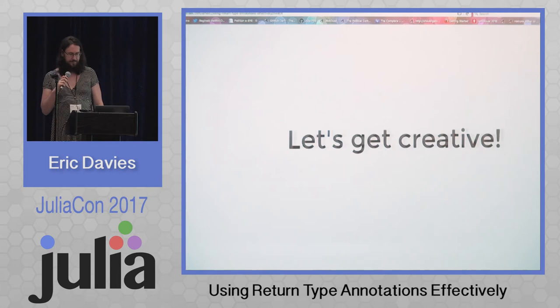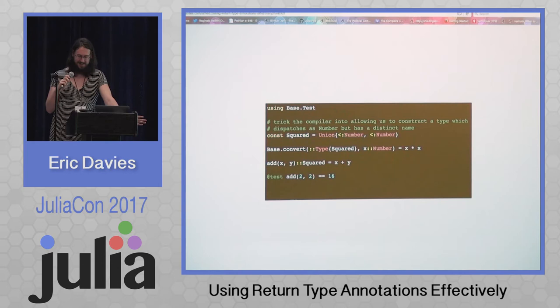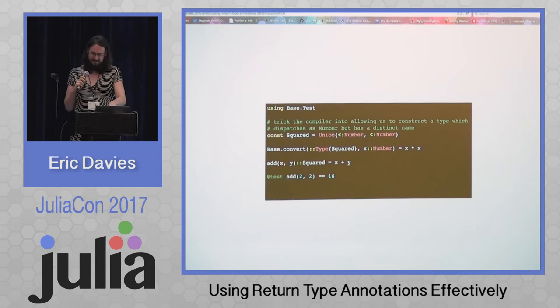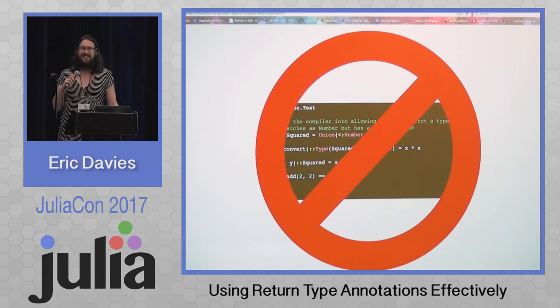What are some interesting things we can do with these? Return type annotations are just a convert and a type assertion. If we can trick the compiler into creating a type which matches an existing type but has a special convert method, we can do some fun stuff. Here's a squared type which is equivalent to number but converting to it squares a number — so add of 2 plus 2 and 2 is 16, which is 2 plus 2 squared. Don't do that. Never do that. But that was a little fun thing if you feel like messing with Julia.